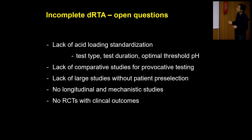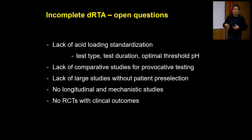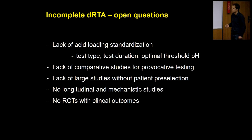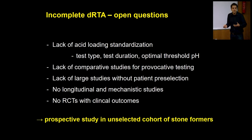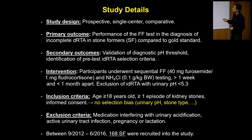The outstanding questions include a lack of acid loading standardization — different tests, nobody knows which to use. There is a lack of studies without patient pre-selection: often patients were only tested if they already had elevated urinary pH or a suspicion of incomplete DRTA. There are no longitudinal or mechanistic studies and no RCTs with clinical outcomes. We designed a study to compare the two tests for diagnosis — a prospective single-center comparative study of the performance of the furosemide-fludrocortisone test in the diagnosis of incomplete DRTA.